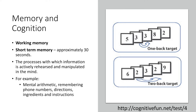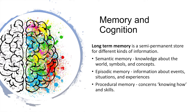Long-term memory is the semi-permanent storage for different types of information, including semantic memory, which is knowledge about the world, symbols, and concepts — essentially knowing what something is. Episodic memory is our memory of events, situations, and experiences. Procedural memory is our memory of how to perform specific tasks and skills. All work requires specific knowledge related to the field of work and specific skills, such as how to use a machine in a safe way or even how to organize a meeting. To go from working memory to long-term memory, we need repetition and feedback. The more you repeat a task and the more appropriate feedback you get, the faster you'll be able to learn that task.